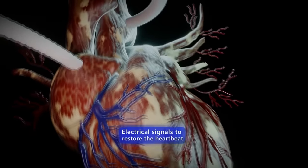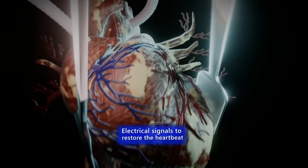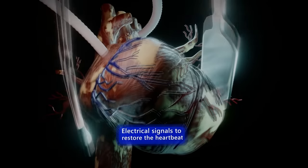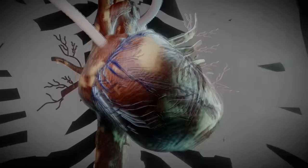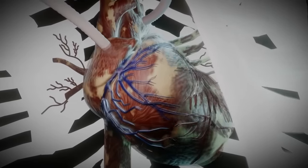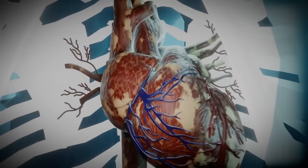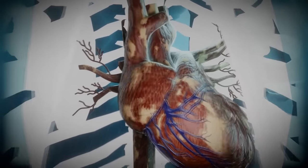With the graft securely in place, the surgeon will use electrical signals to restore the heartbeat and connect a temporary pacemaker to the heart. Once the heart returns to a normal beat, the heart-lung bypass machine will be turned off and the surgeon will reattach the breastbone and suture the skin.